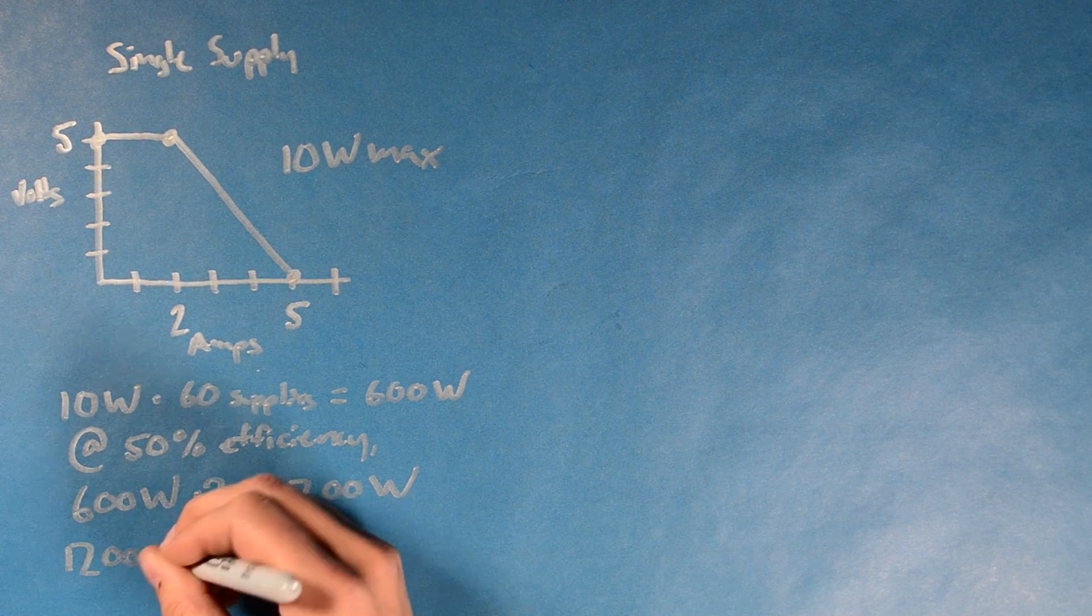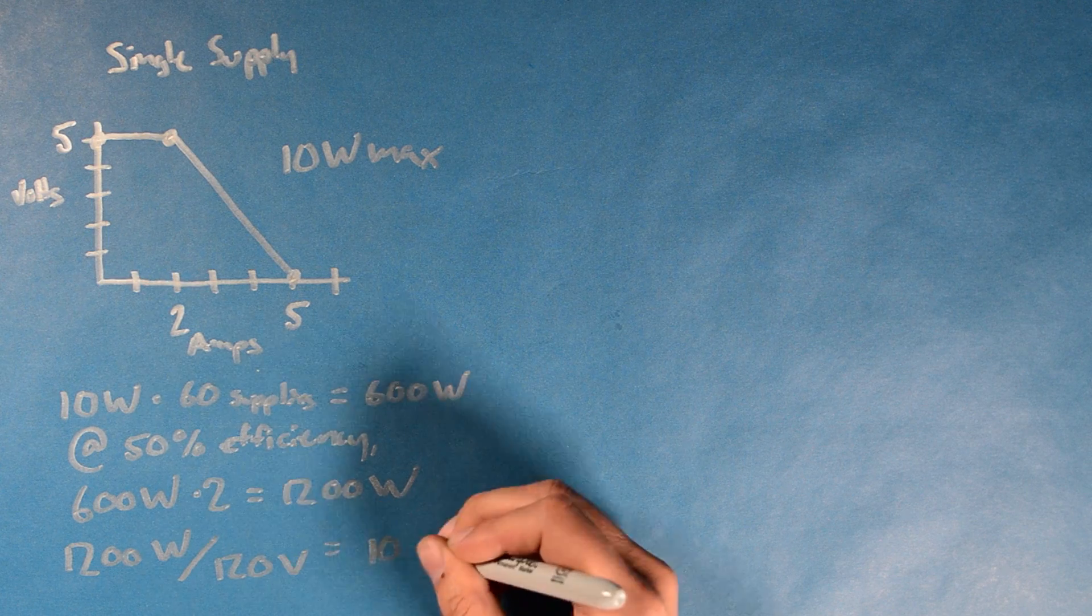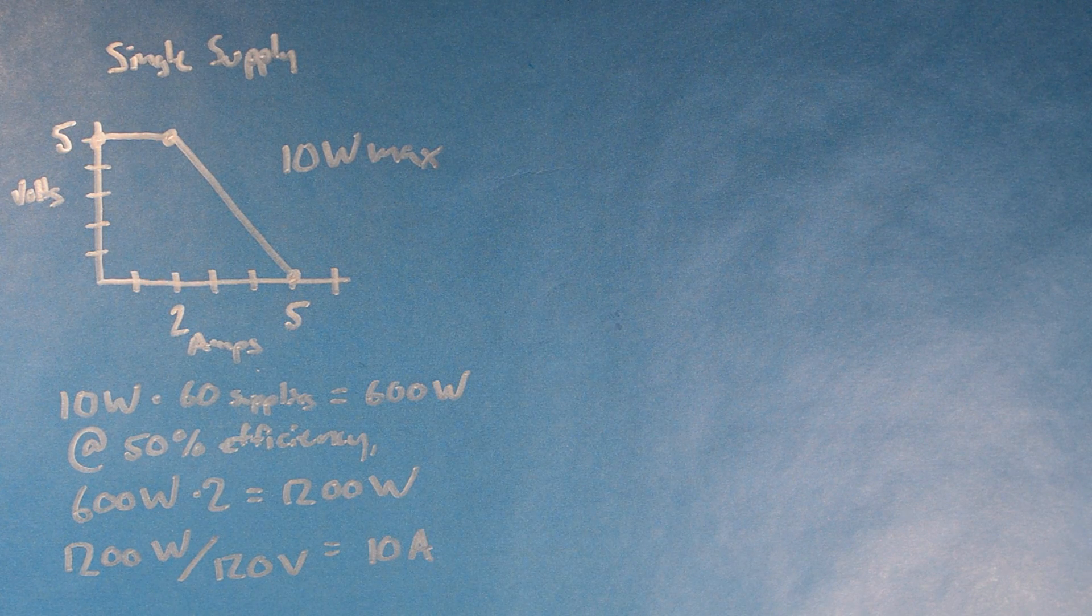At 120 volts from the wall, we'll use 10 amps, which is not enough to trip the 15 amp circuit breaker of the outlet we're using.